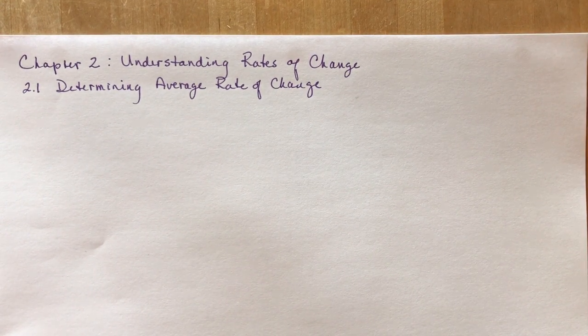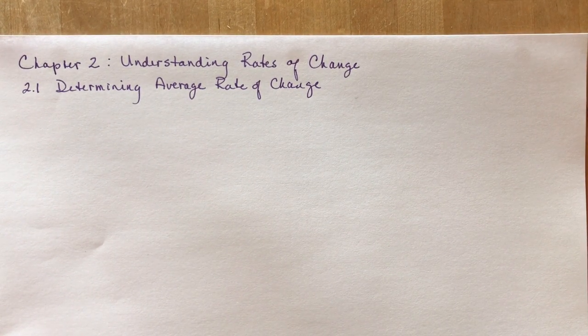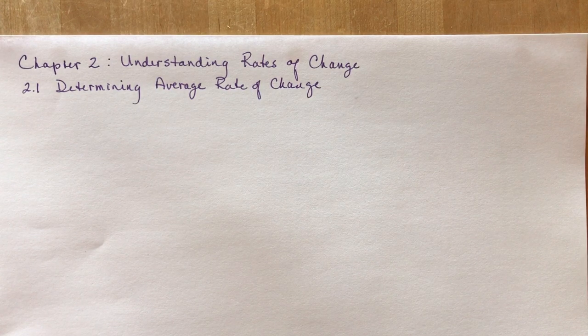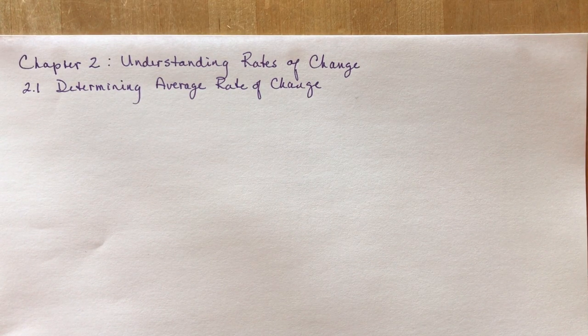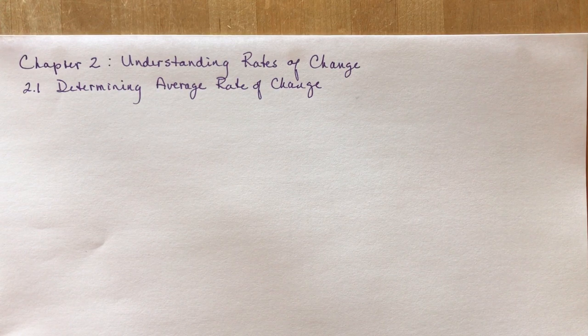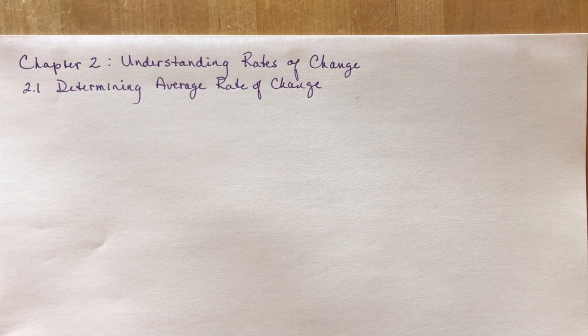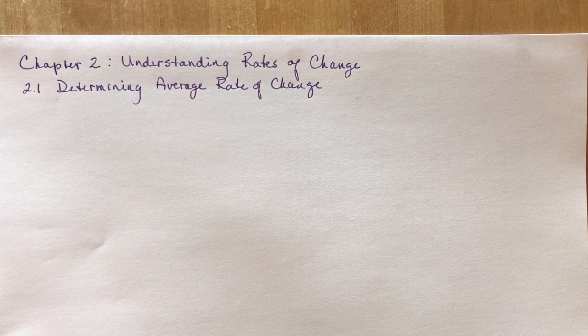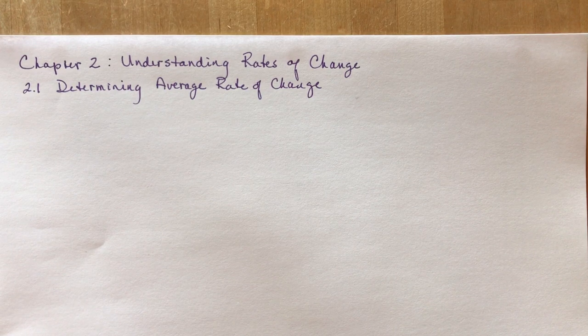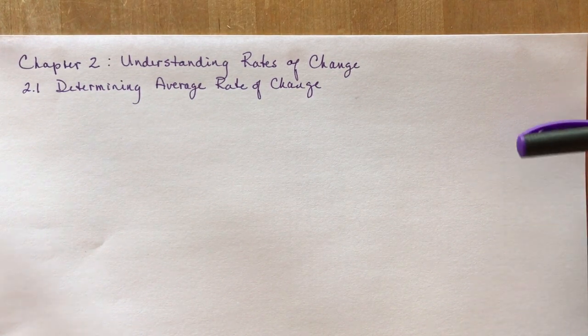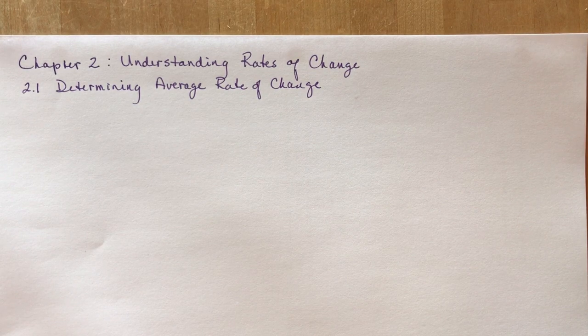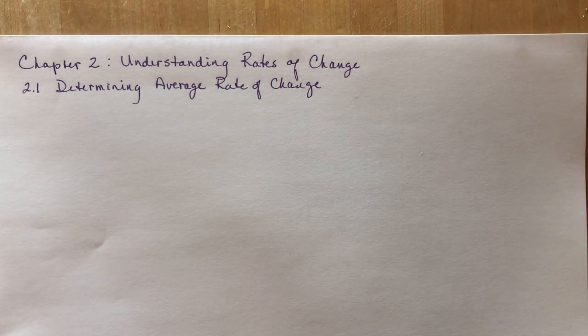Chapter 2 understanding rates of change and 2.1 talks about determining the average rate of change. Now this is absolutely nothing new to you. You determined rate of change before it was called slope and with linear equations it was really easy because the slope was always constant.